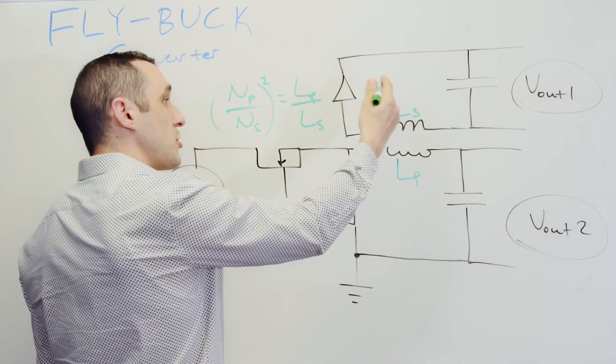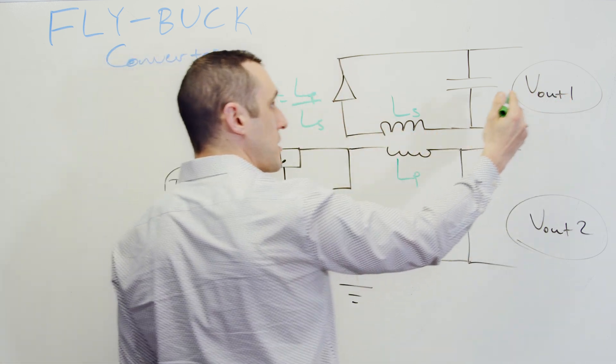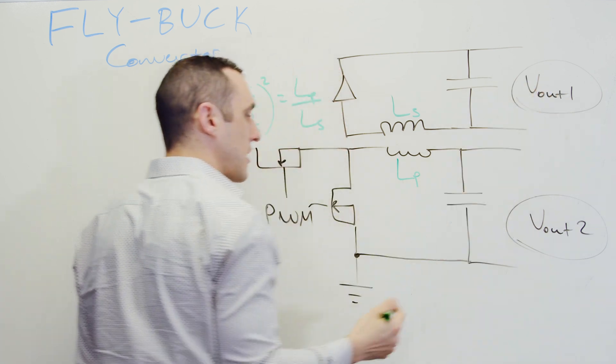And then the LS value is going to determine the ripple on output voltage for rail one. It's also going to determine the value of this voltage here. So it's this turns ratio that then is going to help determine what this output voltage is on the secondary side.